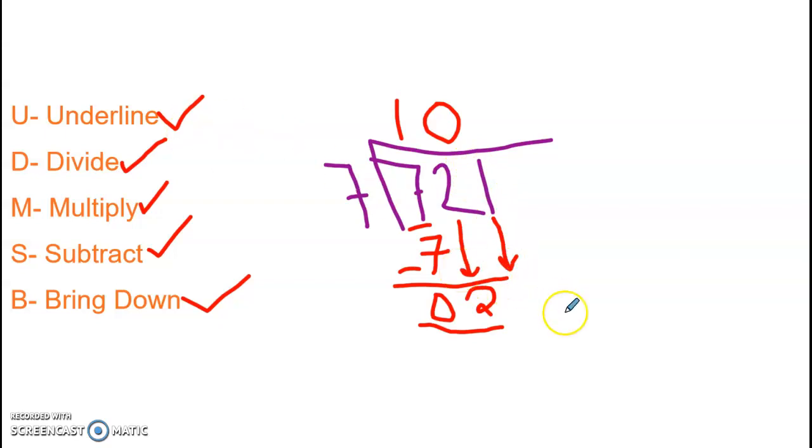So because 7 couldn't go into 2, I have to put that 0 on top. Well, now I can bring down that 1. And now I can pretend that I have 7 going into 21. And I can extend that underline. The reason for that, friends, is because I know... I'm going to do this really quickly.